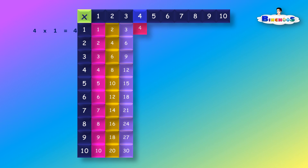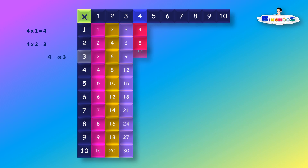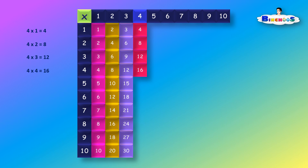4 times 1 is equal to 4. 4 times 2 is equal to 8. 4 times 3 is equal to 12. 4 times 4 is equal to 16. 4 times 5 is equal to 20.